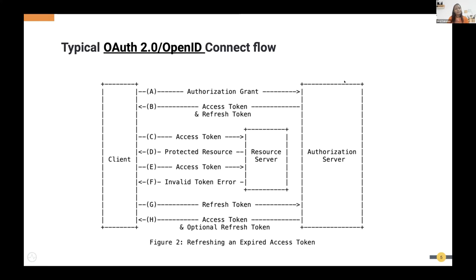For newcomers to the IAM domain, let me roughly explain how the OAuth2/OpenID Connect journey works. There are three actors: a client, an authorization server that authorizes the client to access a resource, and a resource server. The client first makes an authorization or token request to request an access token.